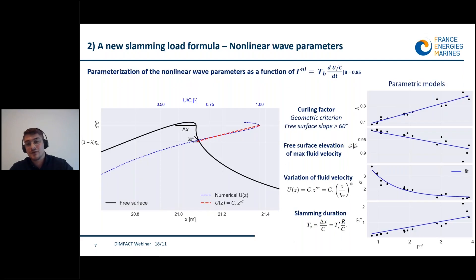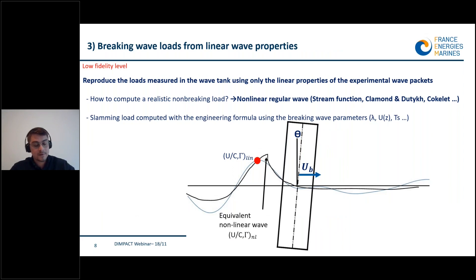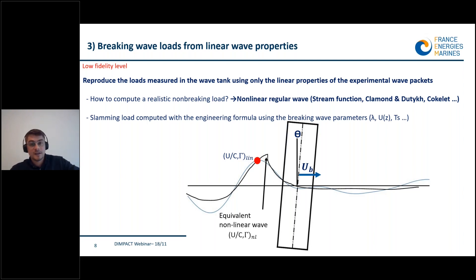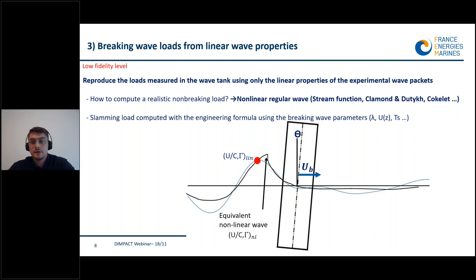How can this formula be used in a design context? The main objective of this part is to incorporate breaking wave loads in global coupled simulations, but in global coupled simulations the wave field is computed using linear theory. How can we reproduce a realistic breaking wave load using only the linear wave properties? In this third part I present a new methodology that aims at reproducing the load measured on the mock-up in the wave tank but using only the linear properties from the same experimental wave packet. We divide the load into two parts: a non-breaking wave load induced by the lower part of the wave under the breaking crest — computable using non-linear regular waves, e.g. stream function theory — and a slamming contribution on the top of the wave computed using the engineering formula.